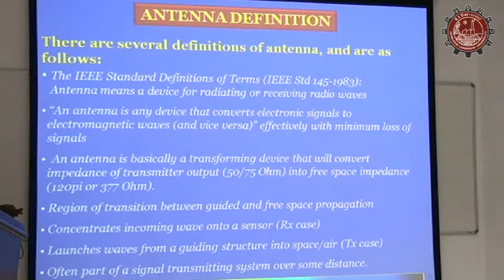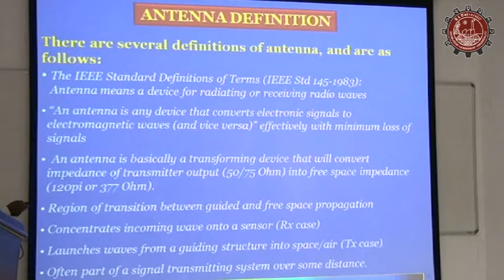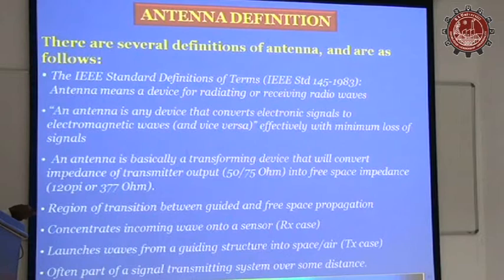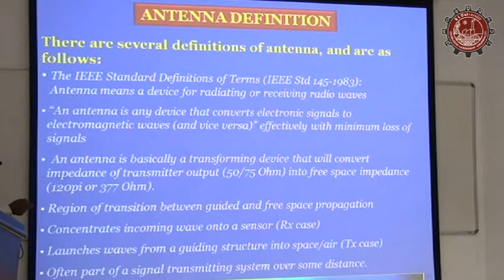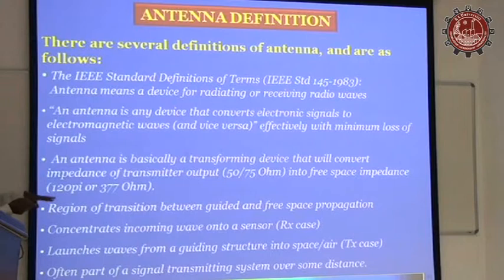My topic today is antennas. First, before going further, these are the definitions everyone knows — taken from textbooks. As per the IEEE standard itself, an antenna is a device for radiating or receiving radio waves. That means it is a device which converts a guided wave into a free space wave. Or we can call it an impedance transformer, because the free space impedance is 377 ohms whereas we work with 50 or 75 ohms. So it basically performs impedance transformation from 50 or 75 ohms to 377 ohms.